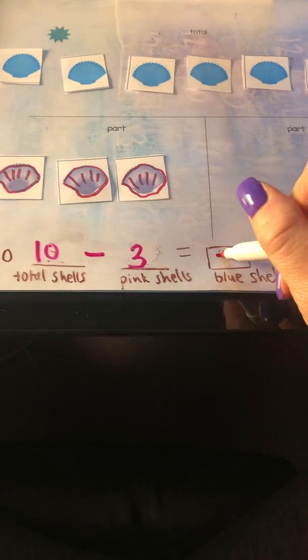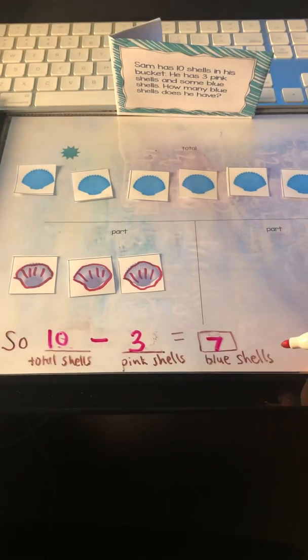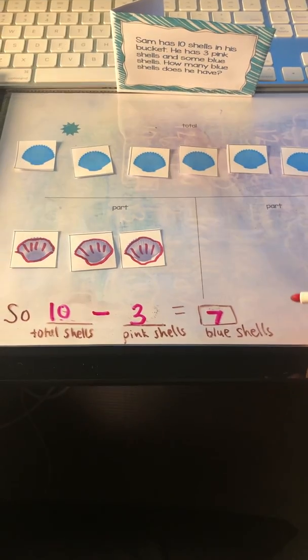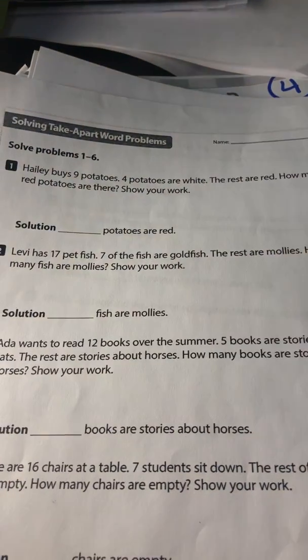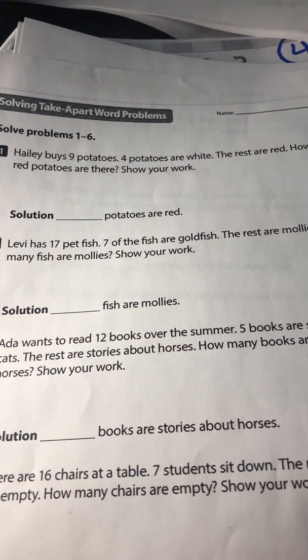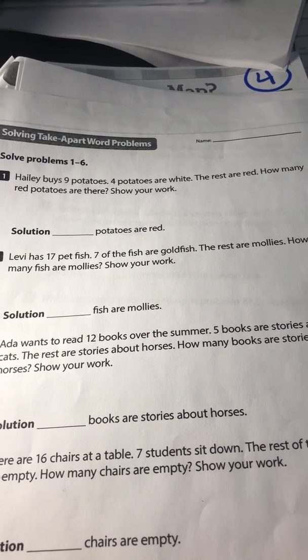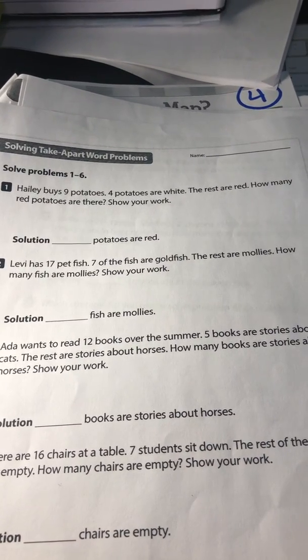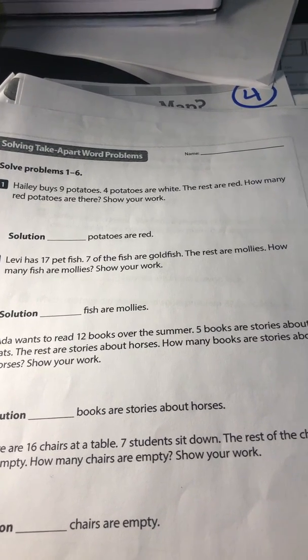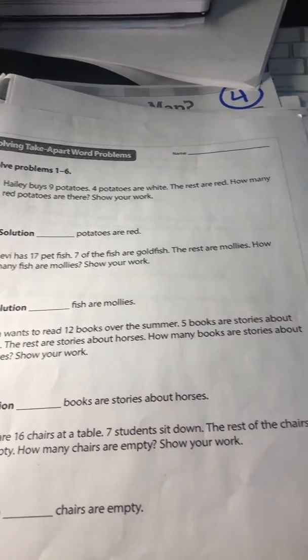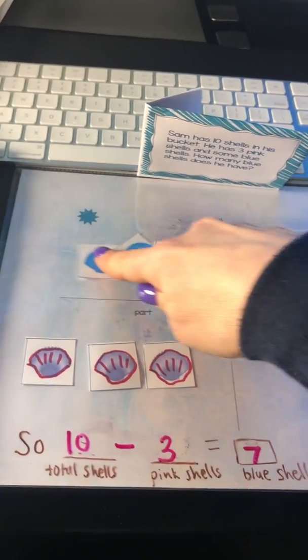One, two, three, four, five, six, seven - seven blue shells. So now I can find my answer: ten minus three equals seven. Sam has seven blue shells. So let's look at another example from your packet, number one. It says Haley buys nine potatoes. Four potatoes are white, the rest are red. How many red potatoes are there?